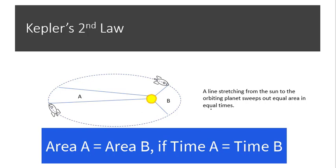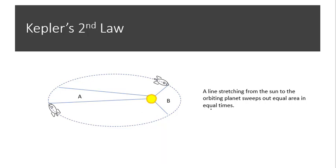Area A and B are equal in size if the spaceship took the same amount of time to travel from one edge of the slice to the other in both situations. The short version of this law is that a line stretching from the sun to the orbiting planet sweeps out equal areas in equal times.